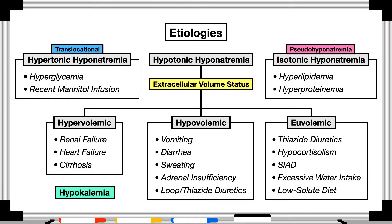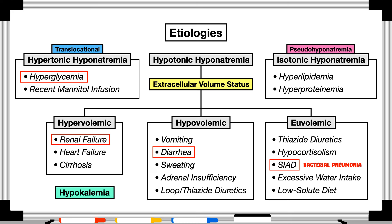With all of the etiologies in mind, you can see how identifying the type of hyponatremia can become incredibly difficult. A patient could easily have renal failure, hyperglycemia, diarrhea, and suspected SIAD from a bacterial pneumonia, or really any combination of the issues listed. In the next video, we'll see the importance of working through these challenges, as different etiologies call for different treatment strategies.